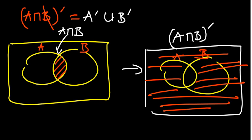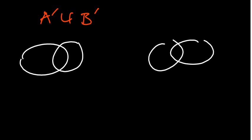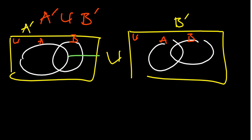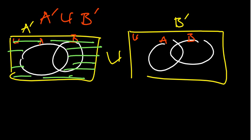Now let's look at the right-hand side, which is dealing with A complement union B complement. You consider the two sets again. We've already talked about what a complement is — it means the set outside the given set. So we take the left one to be A complement, the other one to be B complement, and put a union in between. A complement means shade the region outside A; everything outside A represents A complement. Then in the other set, we are shading B complement — everything outside B qualifies.